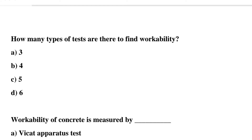So next question: how many types of tests are there to find the workability? Option A: 3, option B: 4, option C: 5, option D: 6. So the correct answer is option C, 5.